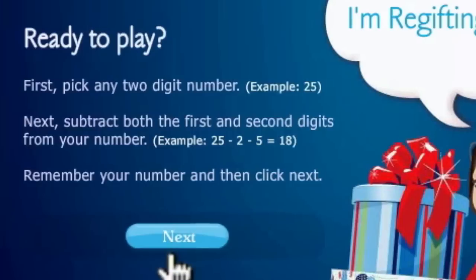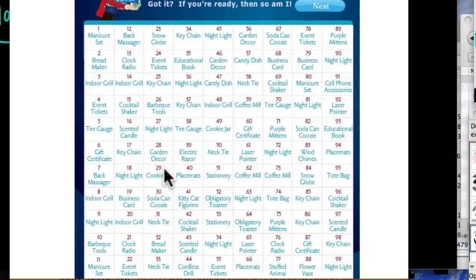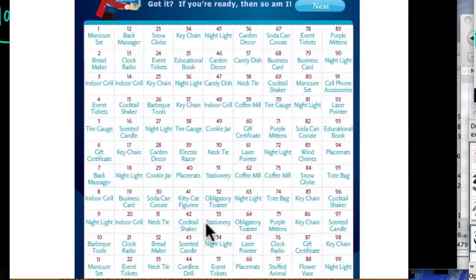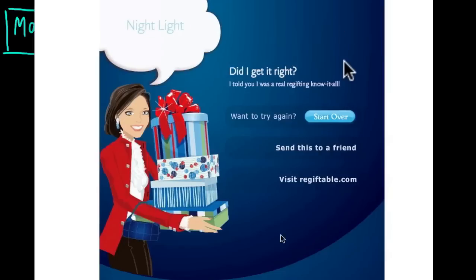For the number 25, I'll take 25 minus 2 minus 5, that equals 18. When you've figured out the math, remember your number and click Next. Here's another flash animation or presentation. They give you this chart. You're trying to predict the gift that's going to be regifted. If you find yours here, and if you pick 25, you add 2 and 5 to get 7, subtract 7 from 25 which gives you 18. So I'd find 18 here on this chart, and I get a night light. Then if you do the prediction, Regifting Robin predicts what will be regifted.